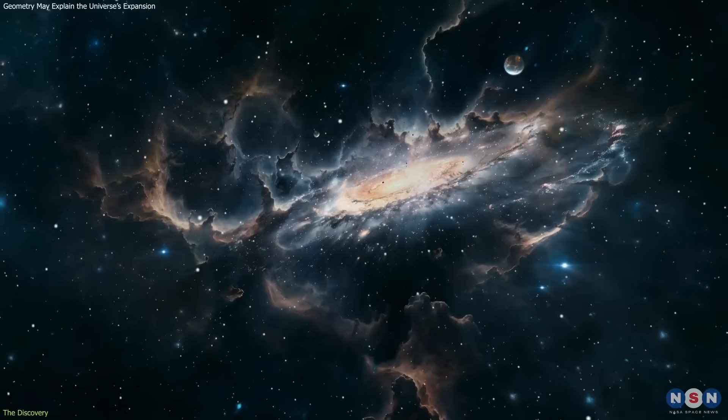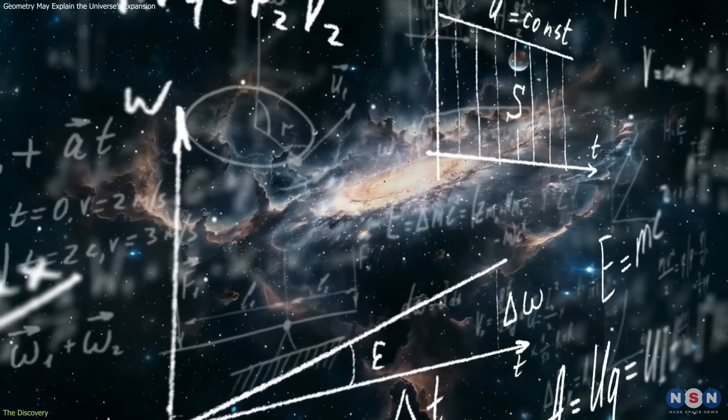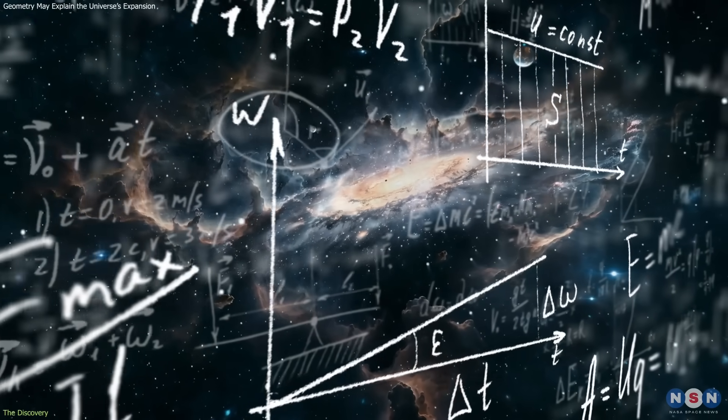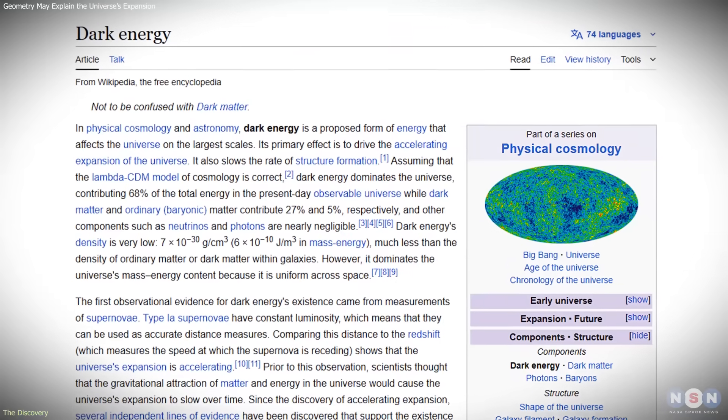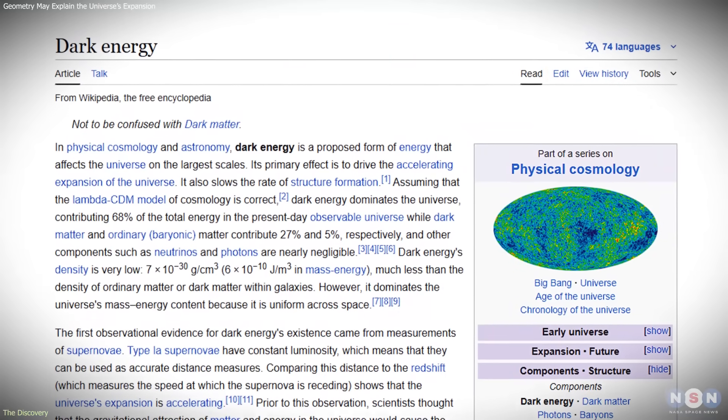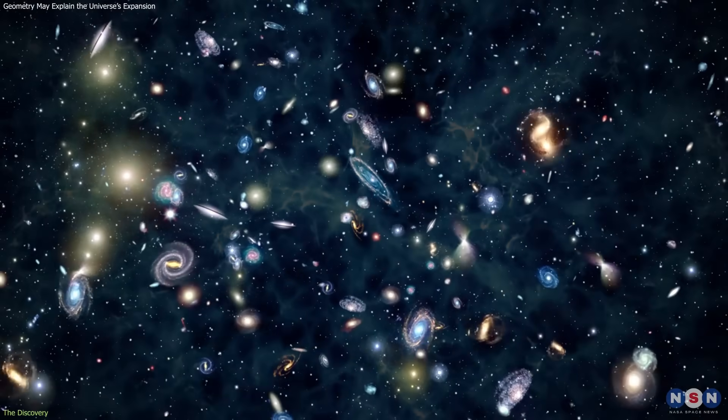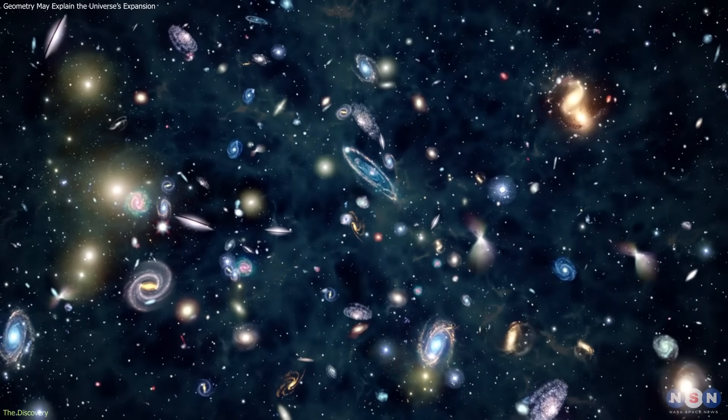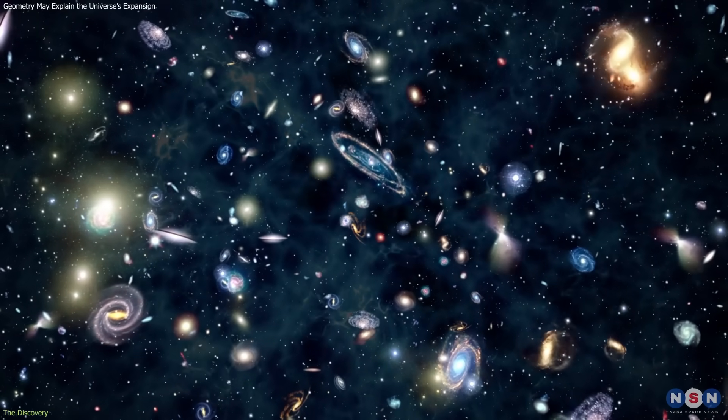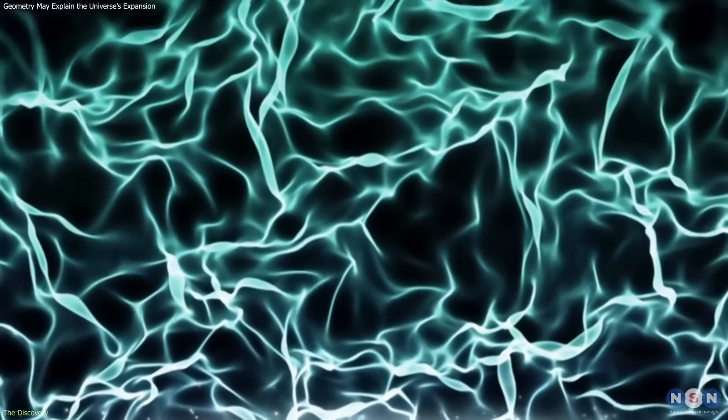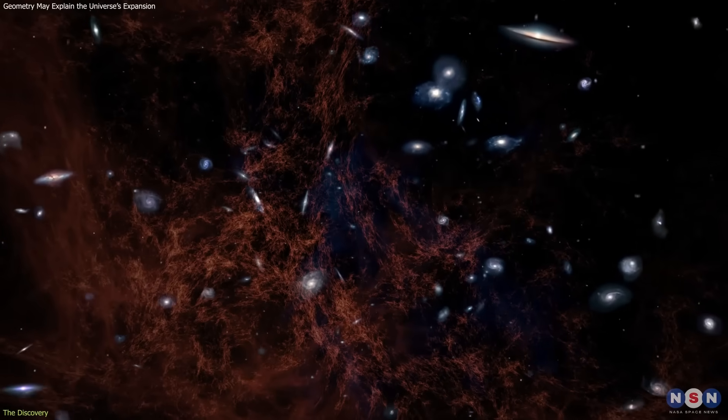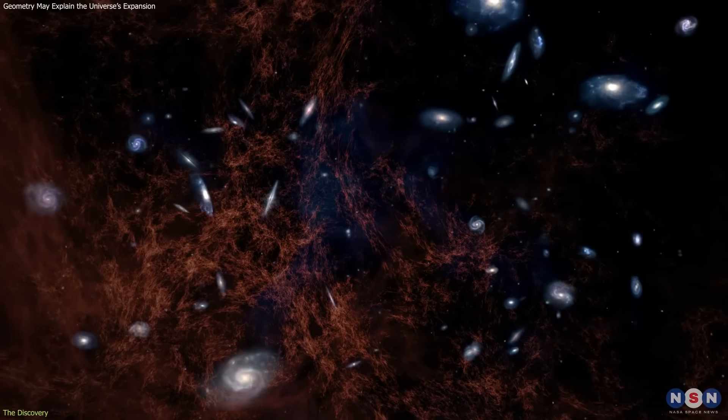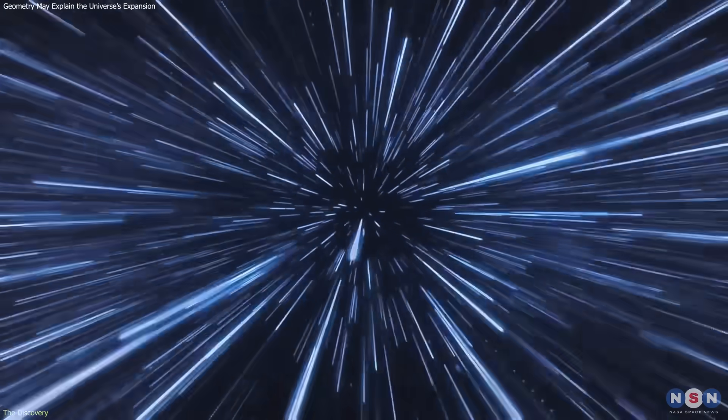To explain this, cosmologists added a new ingredient to Einstein's equations – dark energy, an invisible force thought to make up most of the cosmos. Yet despite its central role, dark energy remains completely hypothetical. It has never been directly observed. Its existence is inferred from the way galaxies move and how light travels across space.